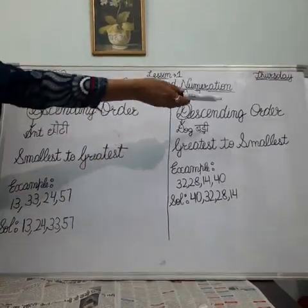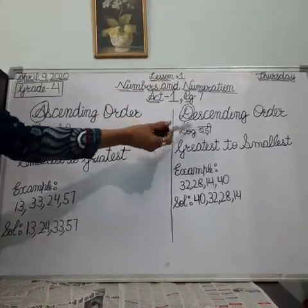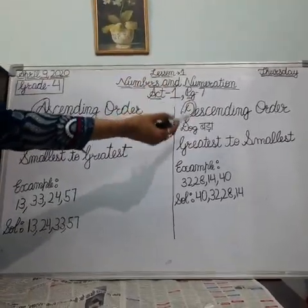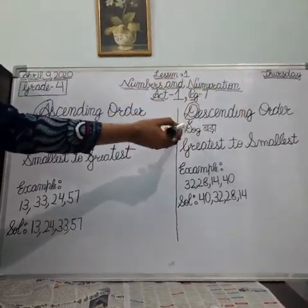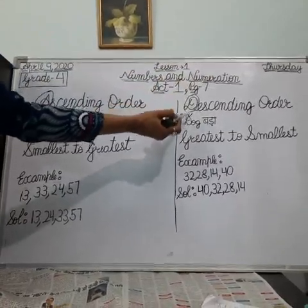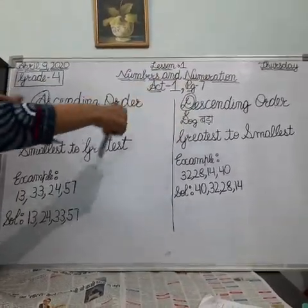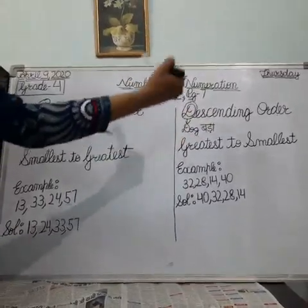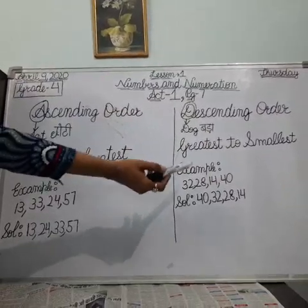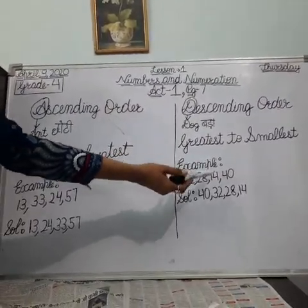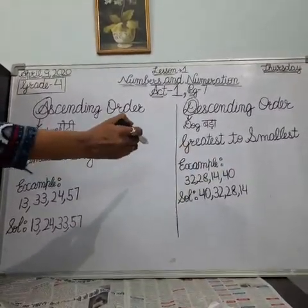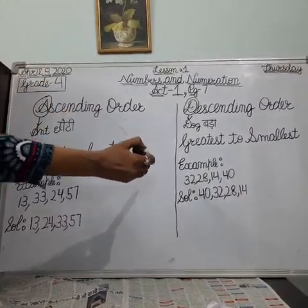A for ascending order. D for descending order — D for dog, dog bada — means greatest to smallest. Bada se chota. Here is a small example with numbers: 32, 28, 14, 40. Now arrange these numbers in descending order — greatest to smallest, bada se chota.